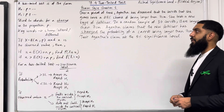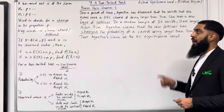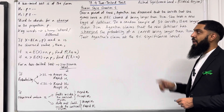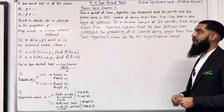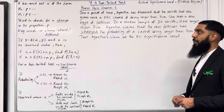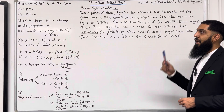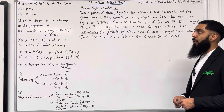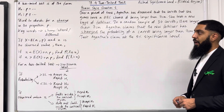A two-tailed test is of the form H0: P equal, H1: P not equal. H0 is called the null hypothesis, H1 is called the alternative hypothesis. It is used to check for a change in the proportion P.